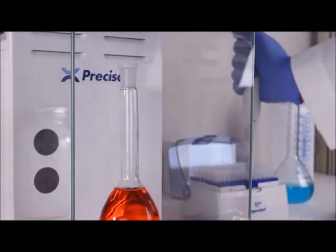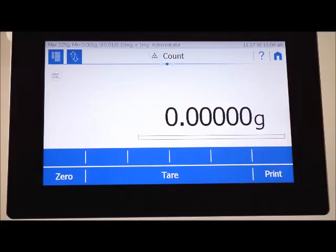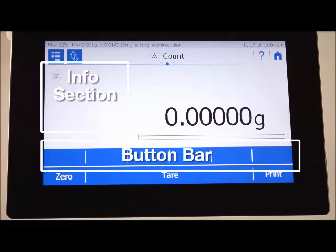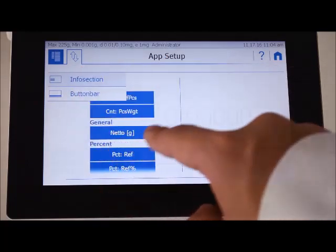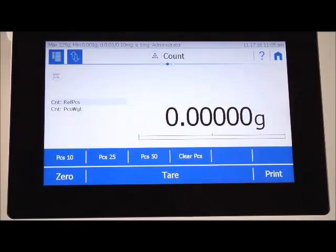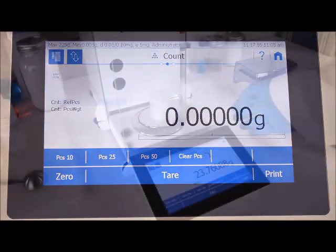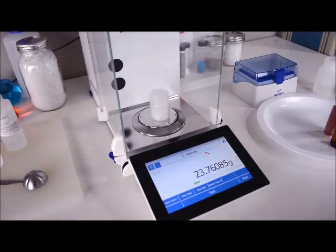such as statistics, formulation, counting, check weighing, percent weighing, net total, density, and animal weight. Every user has completely different needs for their weighing applications. To cater to your application, the weighing screen has two customizable areas: the info section and the button bar. By tapping the button at the top of the screen you can select presets to fill these areas for your specific application.